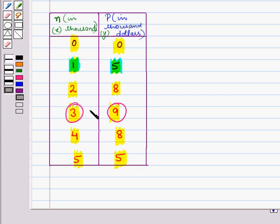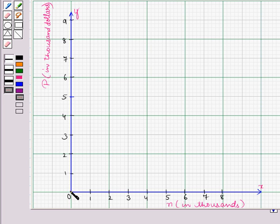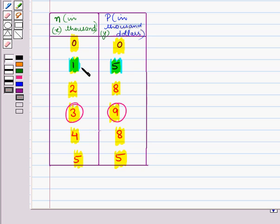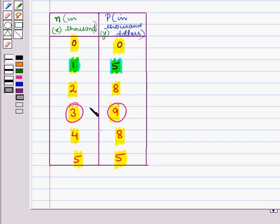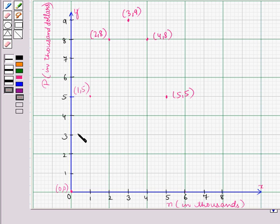Now, let us plot all these ordered pairs on the graph. Here, the first ordered pair is (0, 0). So, this is the point (0, 0). Then, the next ordered pair is (1, 5). So, this is the point, represented by the ordered pair (1, 5). Similarly, we will plot all the ordered pairs on the graph.